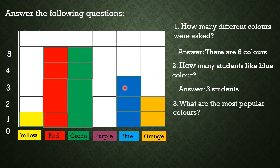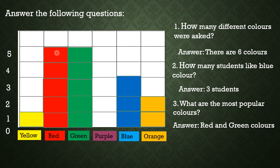Next question: What are the most popular colors? The most popular colors are red and green. Why red and green? Because they have the same number of students who like them. There are 5 students who like red, and there are also 5 students who like green.